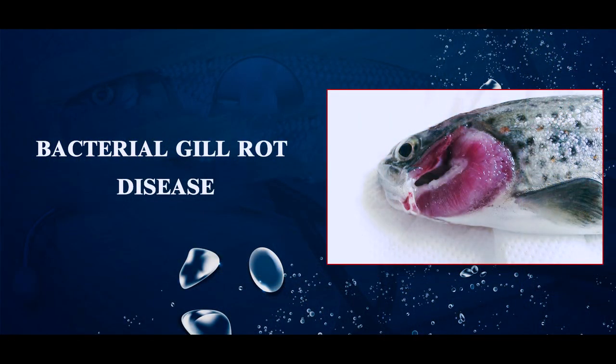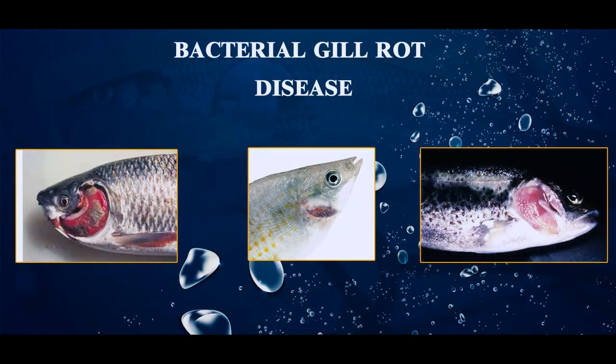The last point is a bacterial disease called gill rot. The gill, instead of being red, becomes almost like a rotten gill — a yellowish kind of thing. There are a lot of medicines available. The best thing is that farmers should go to the nearest veterinary department or fisheries department where there are a couple of medicines available that can be used.